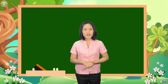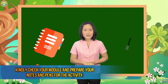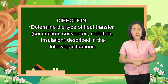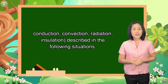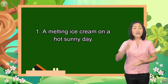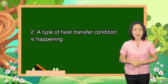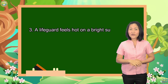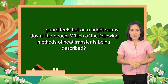Now that you are already familiar with the different types of heat transfer and its concepts, kindly check your module and prepare your notes and pens for the activity. Determine the type of heat transfer — whether conduction, convection, or radiation — described in the following situations. Number 1: A melting ice cream on a hot sunny day. Number 2: A type of heat transfer condition happening in a hot air balloon. Number 3: A lifeguard feels hot on a bright sunny day at the beach. Which method of heat transfer is being described?